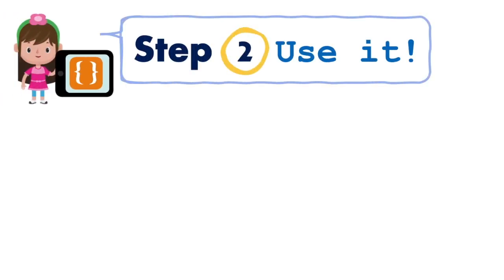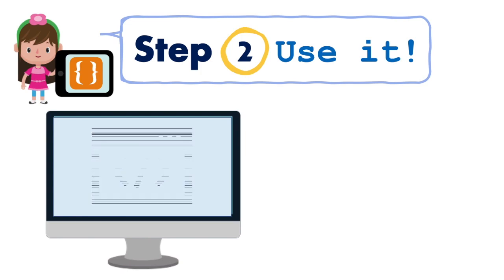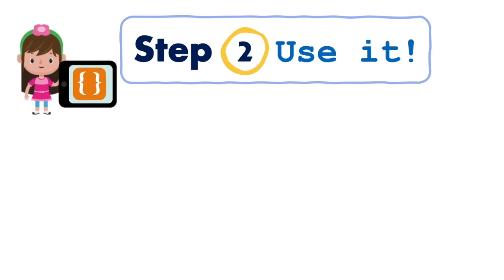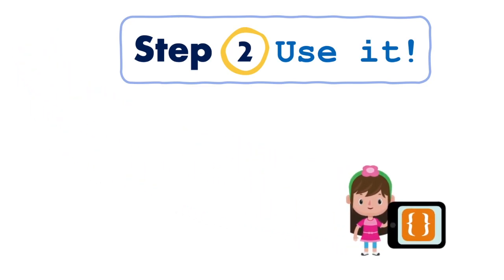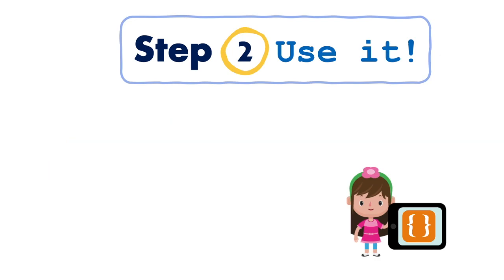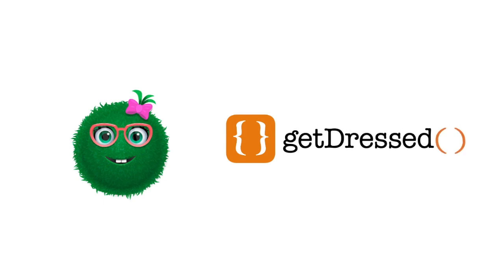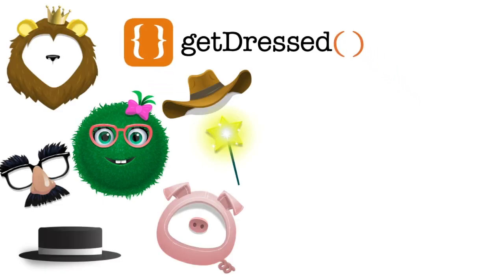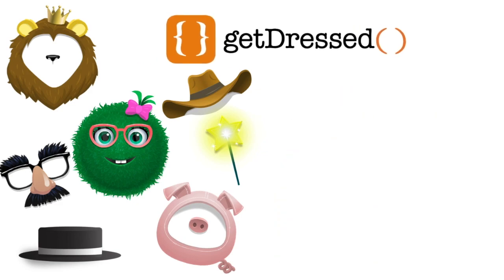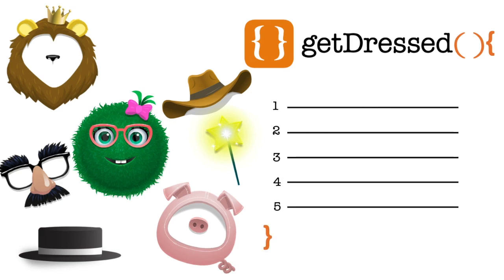Step two: use the function. In code, this means calling the function by simply typing out its name — "get dressed." In your everyday life, calling the function just happens inside your head when you decide, "Okay, it's time to get dressed." Did you know the Codable Fuzzes use this function too? The sequence of steps in the get dressed function for a Fuzz won't be the same as yours. Your mission today is to build a Fuzz and define the steps for its get dressed function, just like you did for your own.